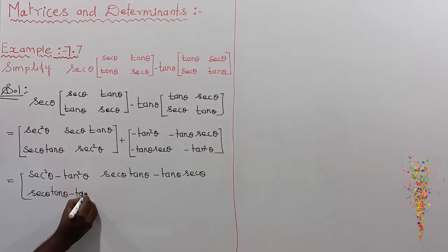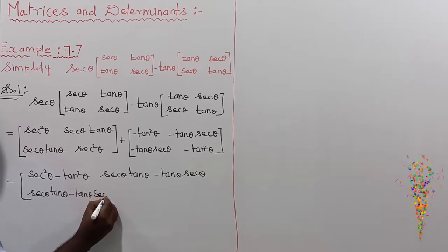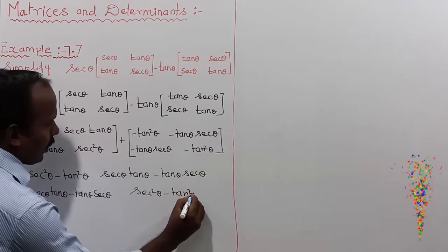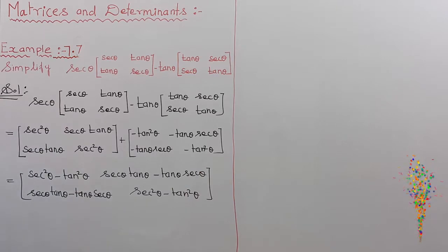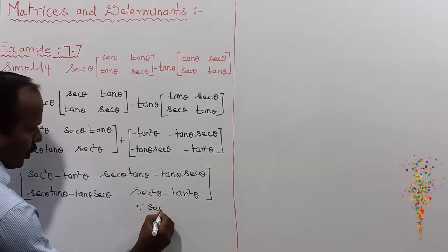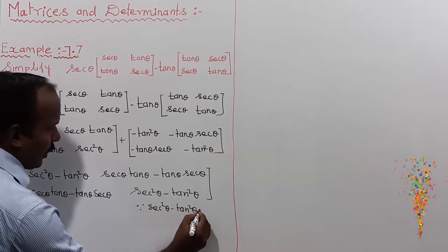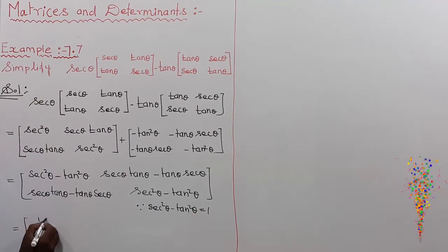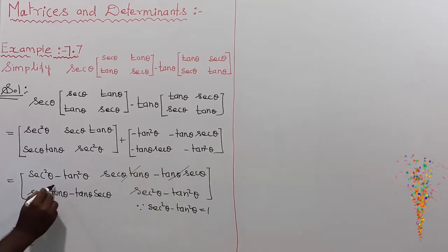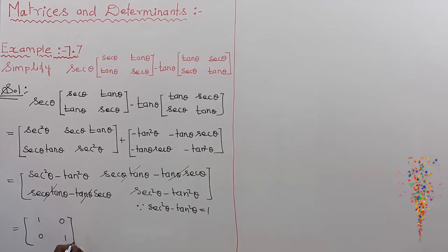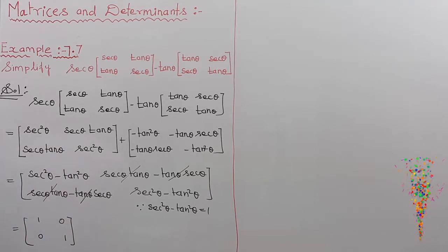The last element is also sec²θ minus tan²θ. We know from the trigonometric identity that sec²θ minus tan²θ equals 1. The cross terms sec θ·tan θ cancel each other, giving 0. Therefore, the solution is the identity matrix [[1, 0], [0, 1]].